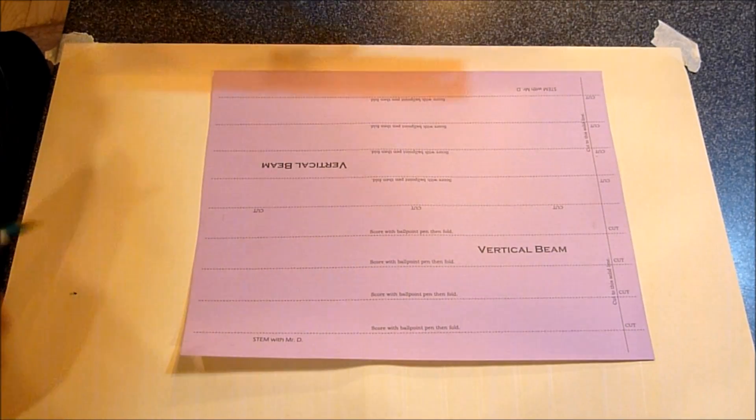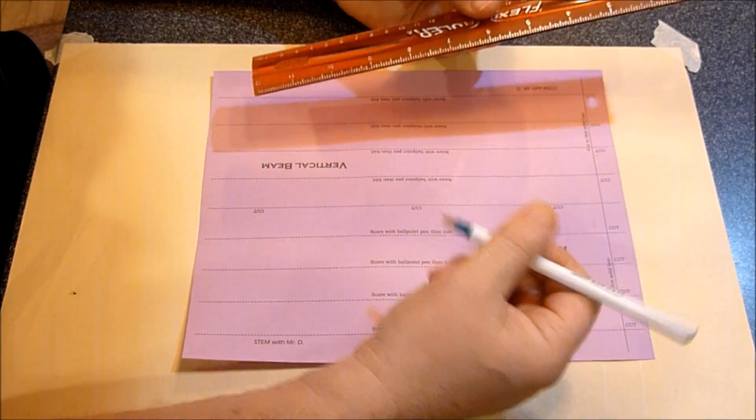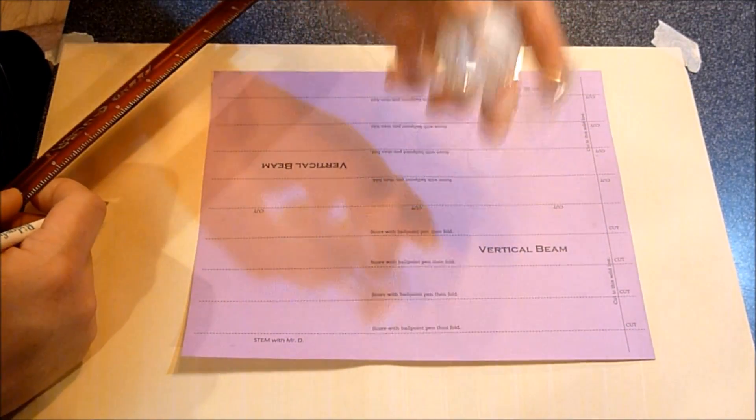Making the vertical beam is really easy. You just need a ruler, a ballpoint pen, and some scotch tape.